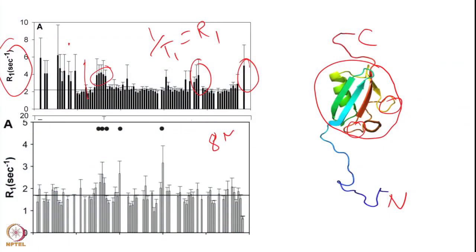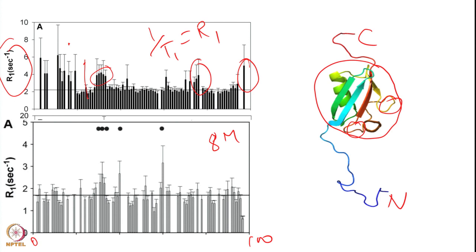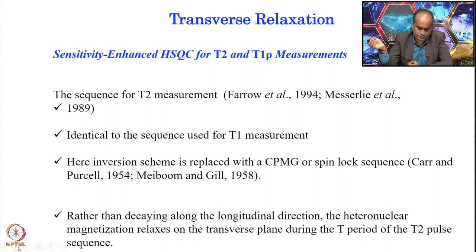When this protein is denatured in 8 M urea, all secondary structure is removed. Plotting R1 residue-specifically in the denatured state shows the profile becomes essentially flat — the sequence-wise variation seen in the folded state disappears. This demonstrates that T1 relaxation rate variation along the sequence arises from the structural elements of the protein.